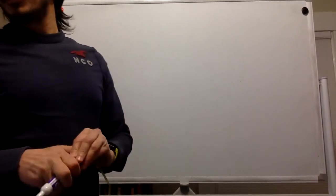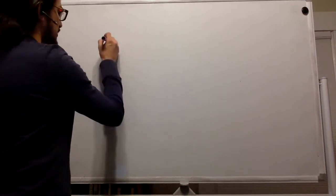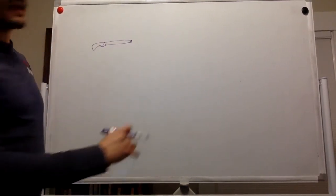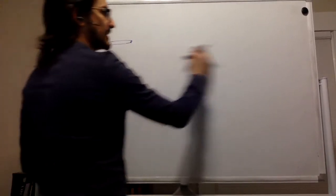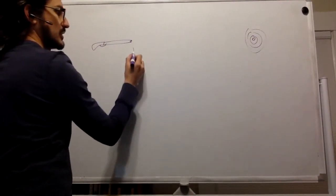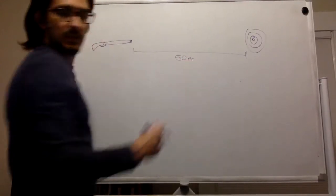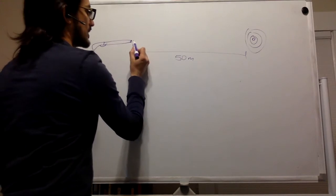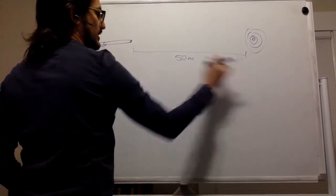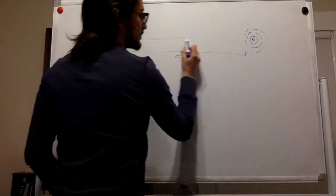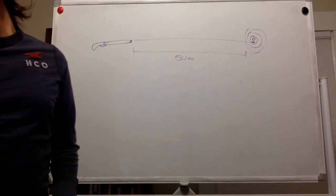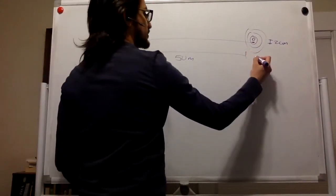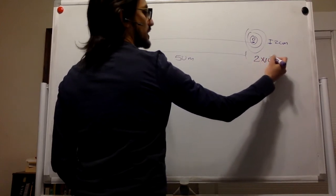In this problem we have a rifle aimed horizontally at a target that is 50 meters away. The bullet is fired and because of gravity it's going to fall while moving at constant speed in the x-direction, so it falls a little bit and misses the target by 2 centimeters, which is 2 × 10⁻² meters.